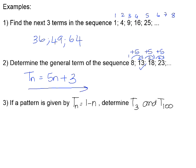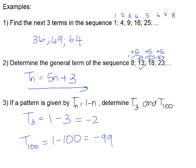Number 3: given the general term TN = 1 − N, determine T3 (the value of the third term) and T100 (the value of the 100th term). We substitute in the value of N for the term we're looking to find: 1 − 3 = −2, and 1 − 100 = −99.